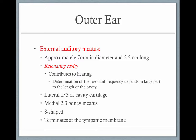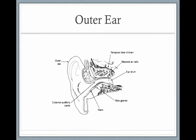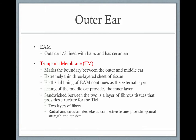The lateral third of the canal is made of cartilage, and the medial two-thirds is bony. It's S-shaped and terminates at the tympanic membrane. The cartilage portion is lined with hair and has cerumen, also known as earwax. The inner portion does not have hair or earwax. The tympanic membrane is also known as the eardrum.